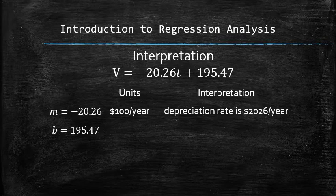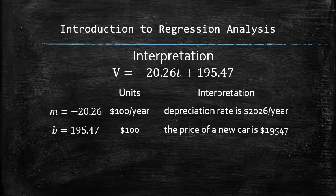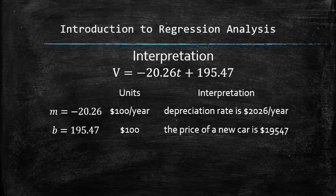The y-intercept is 195.47. The units are $100, which are the same as the output variable. In other words, $19,547 is the price of a brand new car regarding the age.